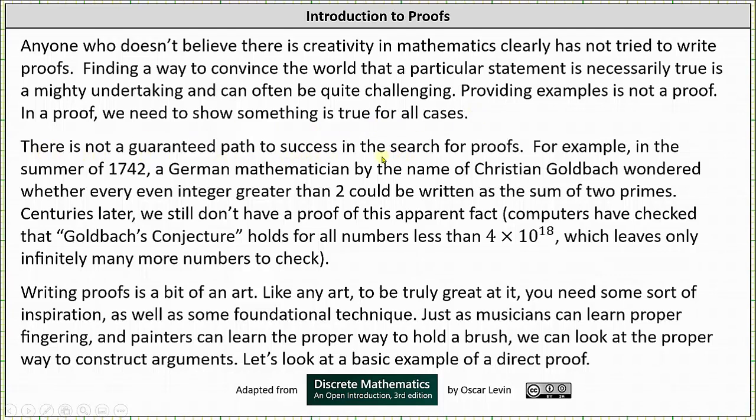There is not a guaranteed path to success in the search for proofs. For example, in the summer of 1742, a German mathematician by the name of Christian Goldbach wondered whether every even integer greater than 2 could be written as the sum of two primes.